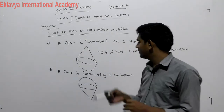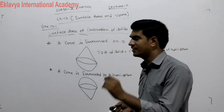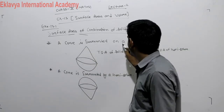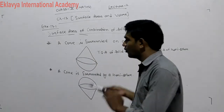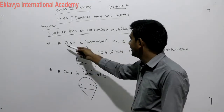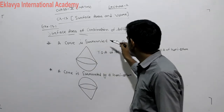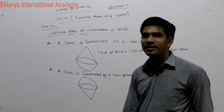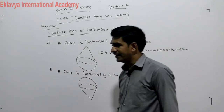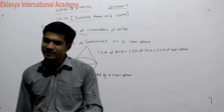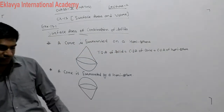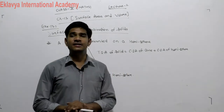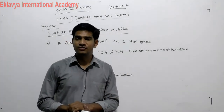For example, a cone is surmounted on a cylinder — meaning a cylinder is placed on top of a cone. Then you can easily find out its TSA: CSA of cylinder plus CSA of cone, which will give the TSA of the solid.